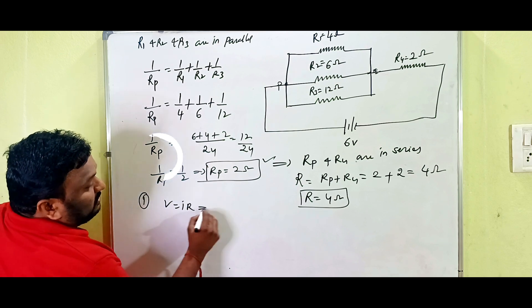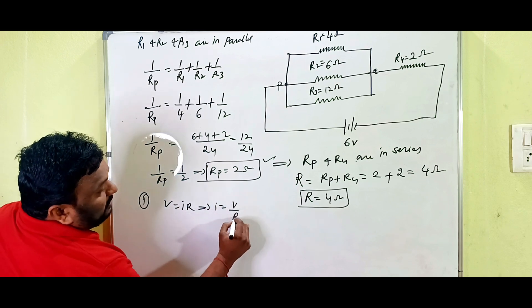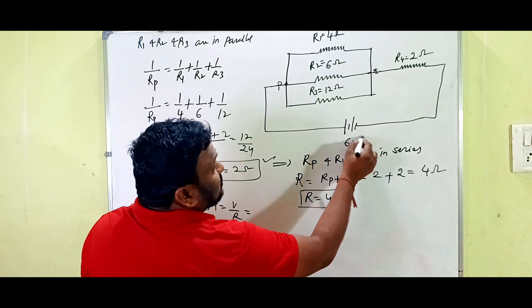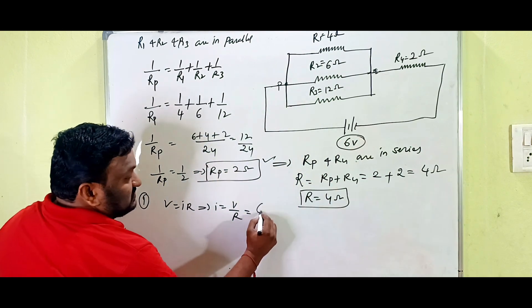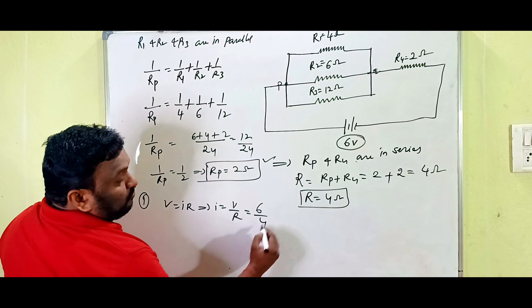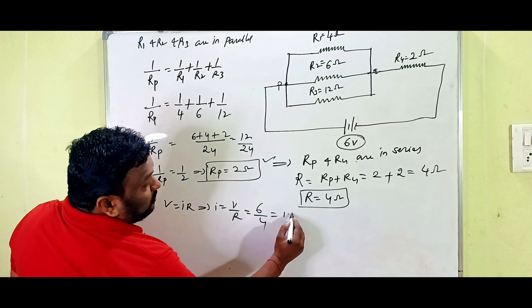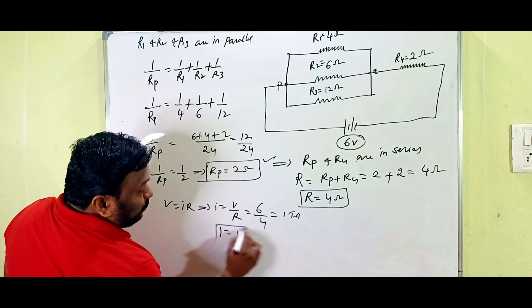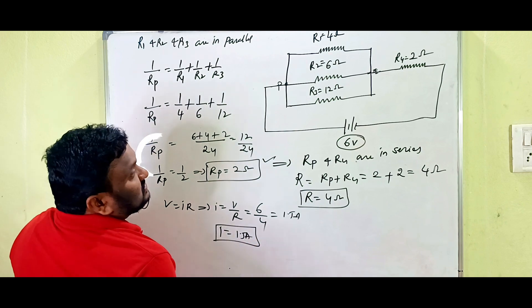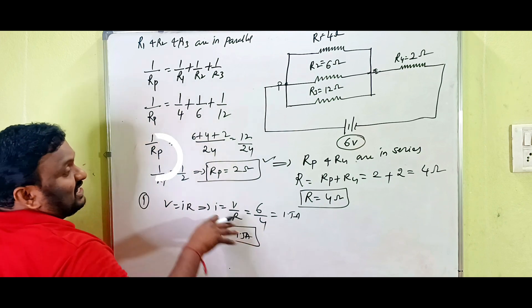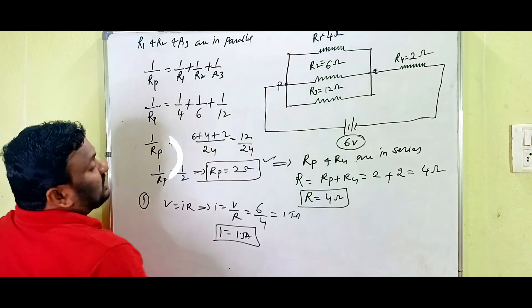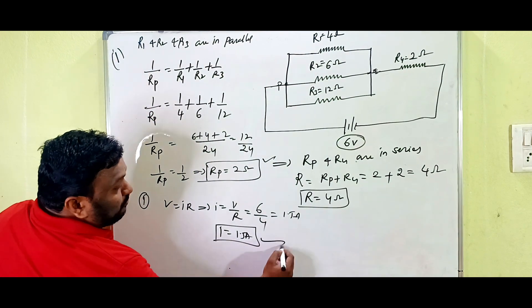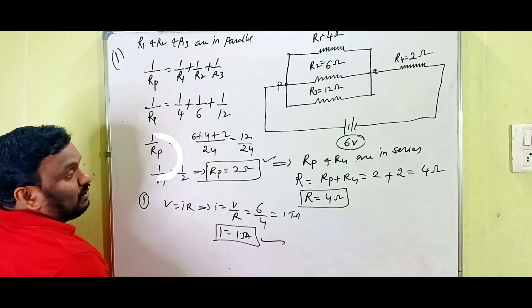Using I = V/R: the battery voltage V is 6 volts and total resistance is 4 ohms, so I = 6/4 = 1.5 amperes. The total current in the circuit is 1.5 amperes. This is the first answer — I equals 1.5 amperes.